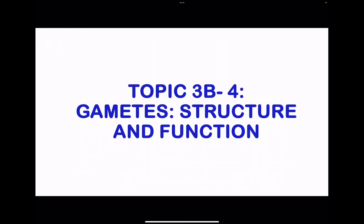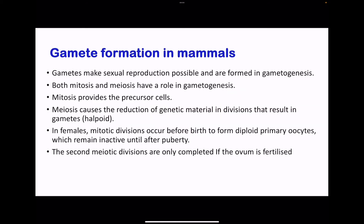Moving on to topic 3b4: gametes, structure, and function. We look at gamete formation in mammals. These gametes are what make sexual reproduction possible. For gametes to be formed, mitosis occurs to produce the precursor cells, which are then used in meiosis to produce the haploid gametes — this process is called gametogenesis. Mitosis provides the precursor cells, and then meiosis causes the reduction leading to the formation of the haploid gametes.